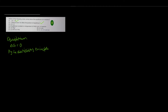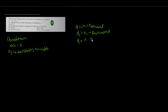The third statement says Q = K at equilibrium. We studied three conditions based on the reaction quotient: when Q < K, the reaction moves in the forward direction; when Q > K, it moves in the backward direction; and when Q = K, that stage is the equilibrium stage. So the third statement is also correct.